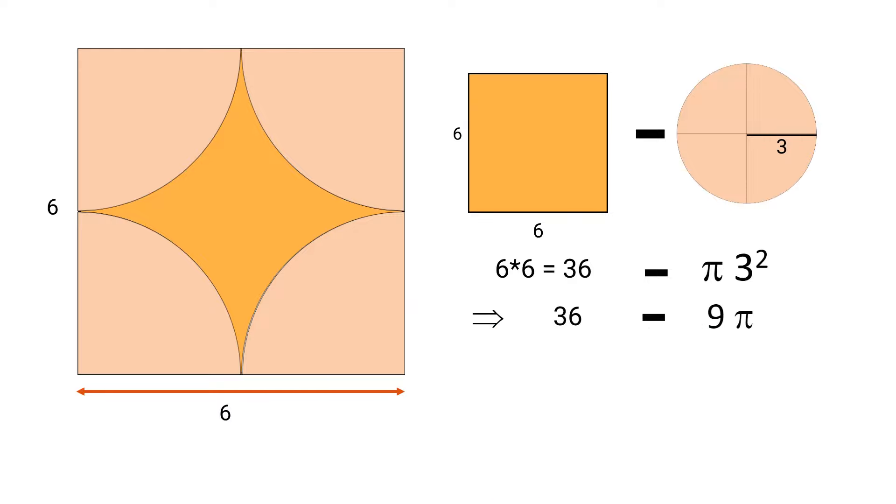So the required area is 36 - 9π. Taking 9 common, we get 9(4 - π). All the best, have a great day!